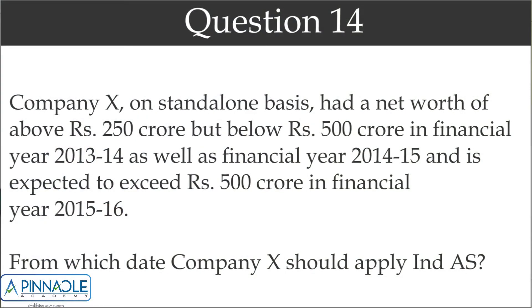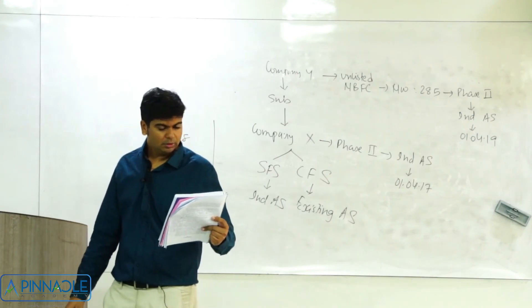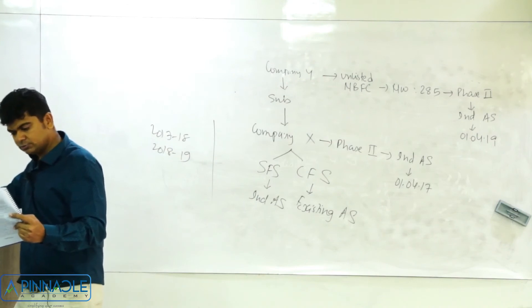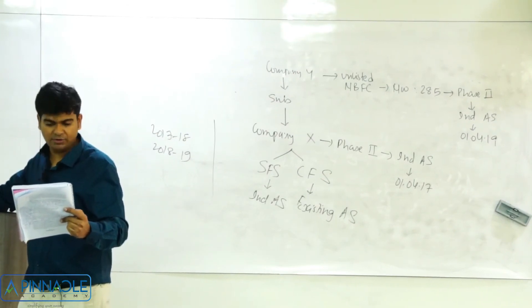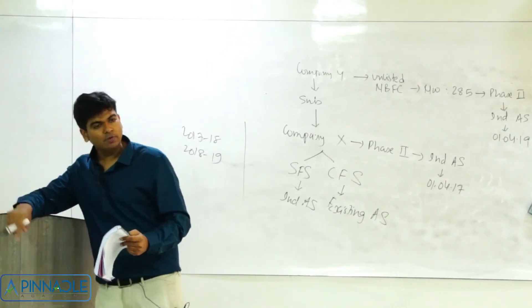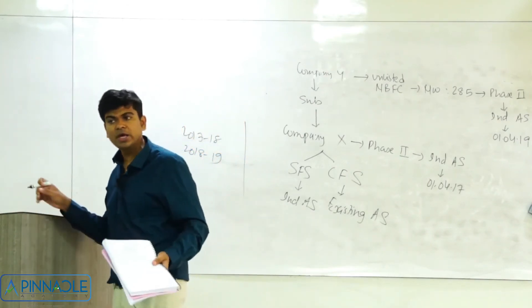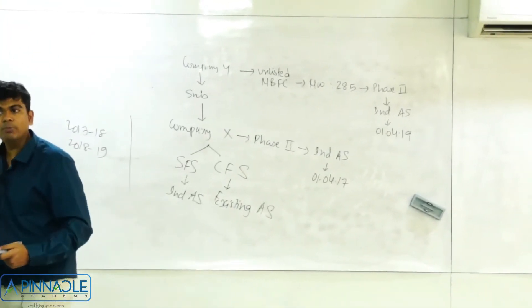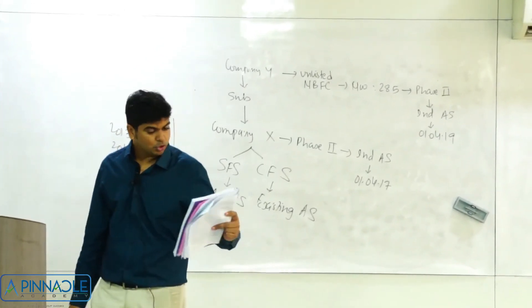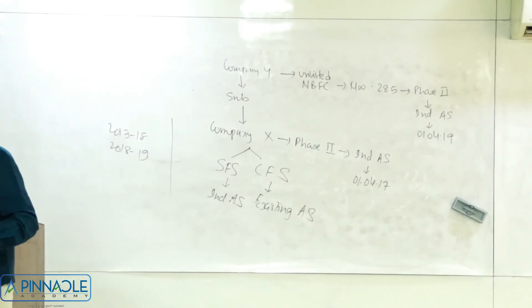Question 14: Company X has a net worth of above 250 crores but below 400 crores in both 2013-14 and 2014-15, and is expected to exceed 500 crores in financial year 2015-16. Since net worth will cross 500 crores on 31st March 2016, the company will be covered in Phase 1 and must apply Ind AS from 1st April 2016 with no preparatory time available.